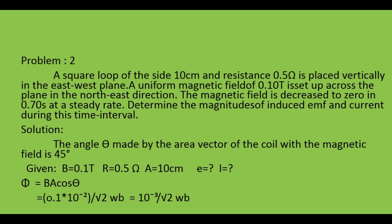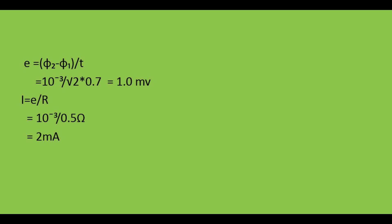Now write the induced EMF formula: E equals (phi2 minus phi1) divided by T. Here phi2 equals 10 to the power minus 3 divided by root 2, and pi1 equals 0 since the magnetic field decreases to zero. Substituting: 10 to the power minus 3 divided by root 2, divided by T equals 0.7. Simplifying this equation, we get E equals 1.0 millivolt.